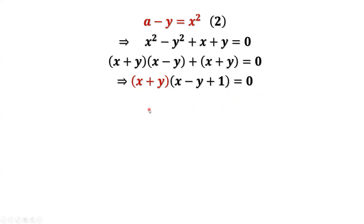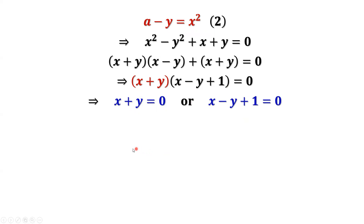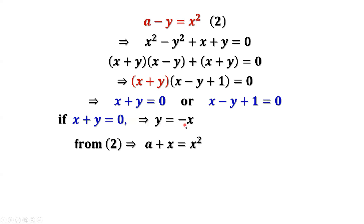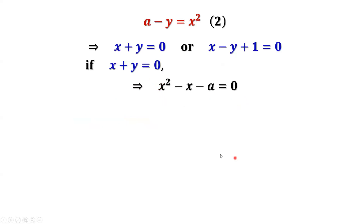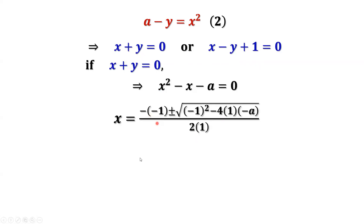We have two possible answers. The first is x plus y equals 0. If this result is true, solving for y gives y equals negative x. From result 2, replacing y by negative x, we have a plus x equals x squared. Simplifying: x squared minus x minus a equals 0. Using the quadratic formula, we get the first two possible solutions for x.